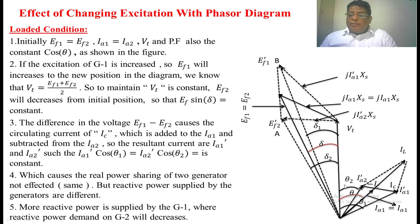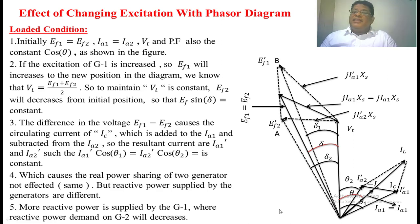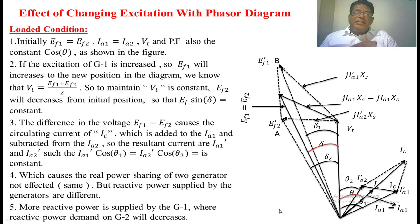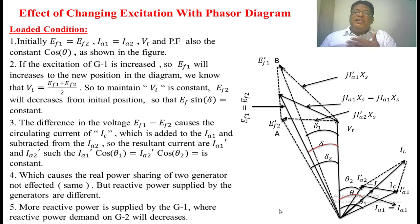The active current supplied by the two generators is constant — that is, the projection of IA1 dash and IA2 dash on the VT phasor is constant. But the vertical component is different — that is, the reactive power supplied by the two generators changes. As the excitation is increased, the reactive power supplied by that generator will be affected, but there is no change in the real power supplied by the parallel operation. So when we increase the excitation of the first alternator, the reactive power supplied by the first alternator will increase, but the real power stays the same. Therefore, the reactive power supplied by the second generator will decrease.